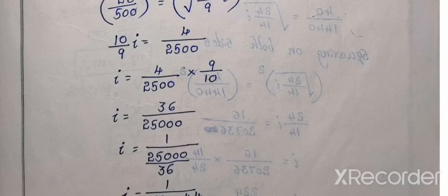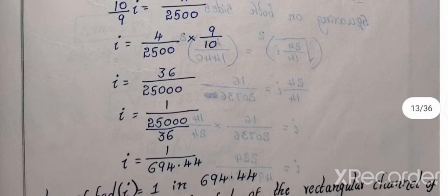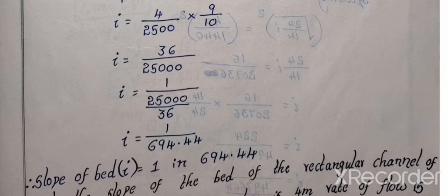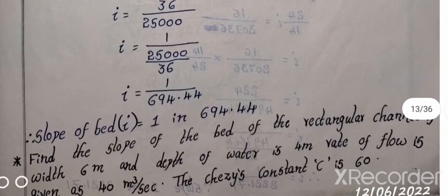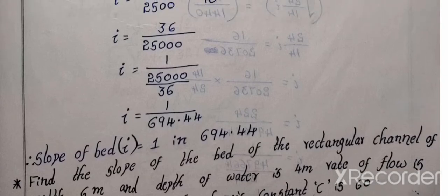So 9 into 4, 36, 25 into 10, 25,000. Slope, 1 by n, 1 is 2 n. This, reverse, 1 by 25000 by 36. I value equal to 1 by 694.44, one in 694.44, slope of the bed.